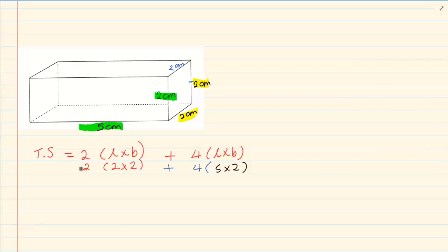Two times two is four times two is eight plus five times two is ten. Ten times four is forty. So the total surface area is forty-eight and you are going to put centimeters squared. Remember area is squared.